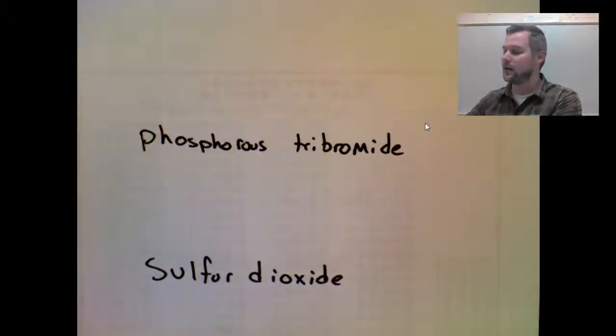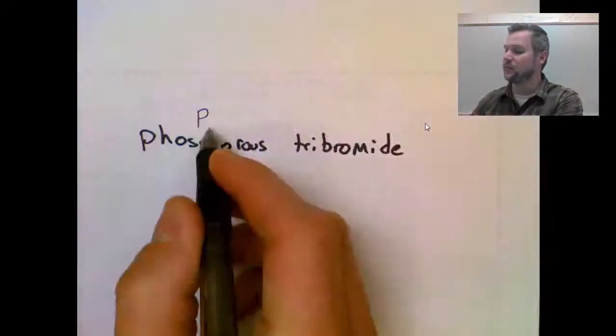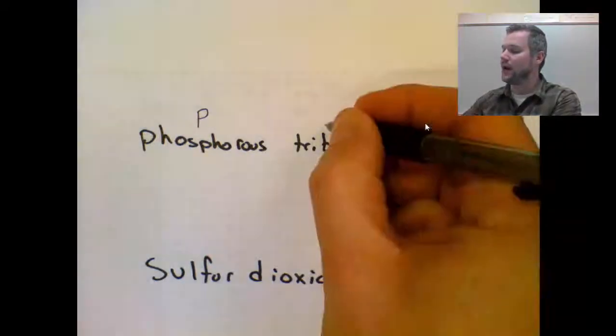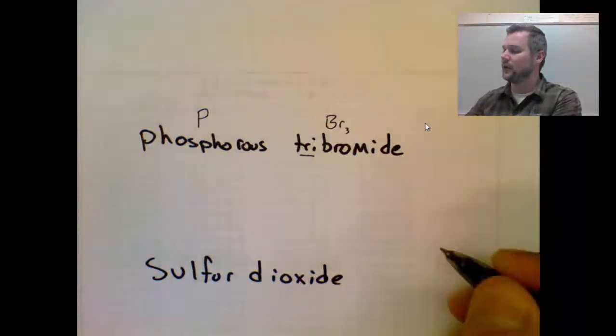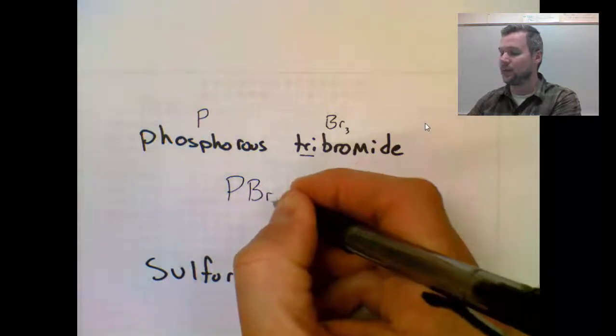Phosphorus tribromide. It's going to be a P for phosphorus, subscript one, which I can omit. Bromide is Br, subscript three from the tri. So that makes it PBr3.